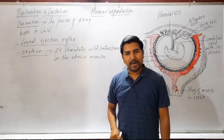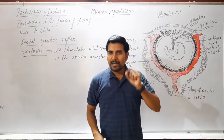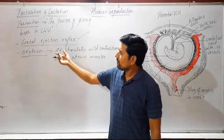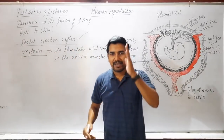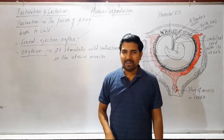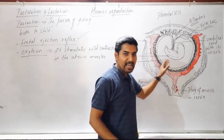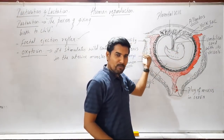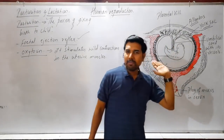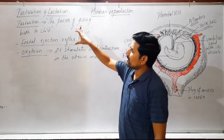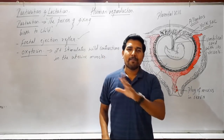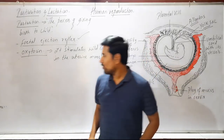This process is called parturition or delivery. Parturition is under the control of a placental hormone — the fetal ejection reflex. The placenta exhibits mild contractions in the uterine muscles, which is the fetal ejection reflex. The fetal ejection reflex along with oxytocin hormone are responsible for the violent contractions of the uterine muscles so that the baby can take its birth. Because of this, oxytocin hormone is called the delivery hormone or parturition hormone.